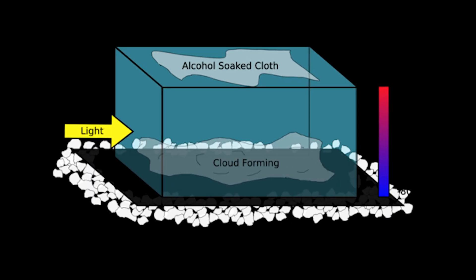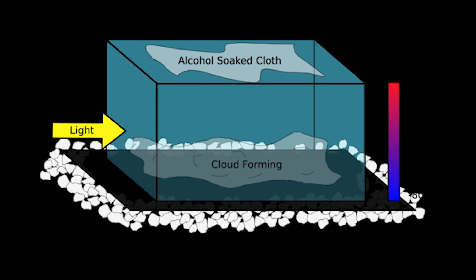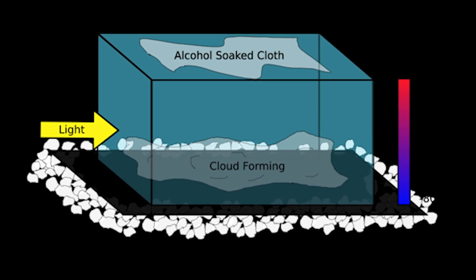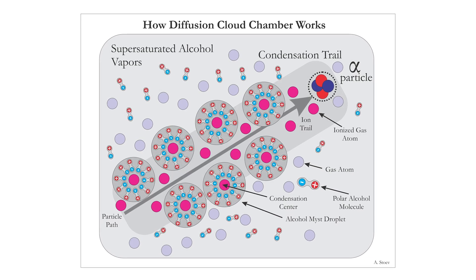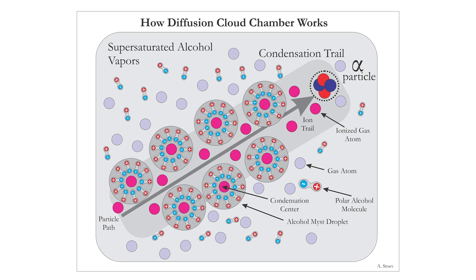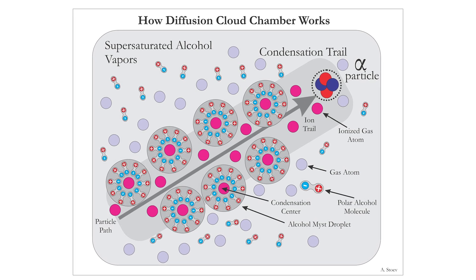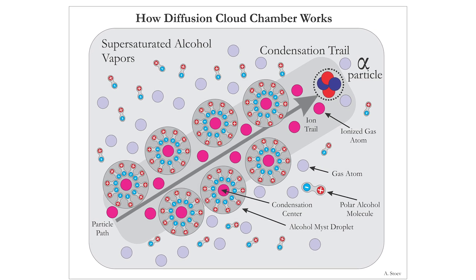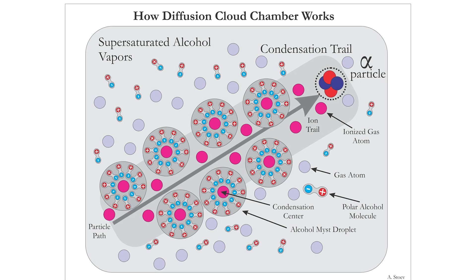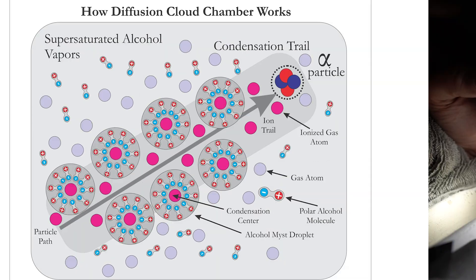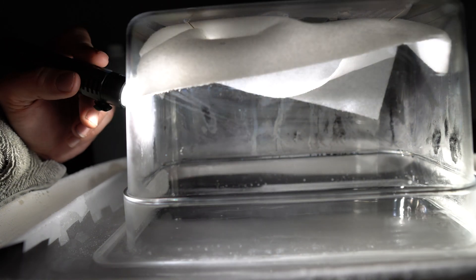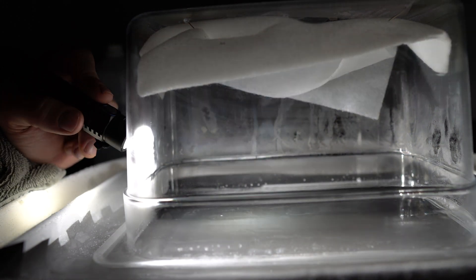The chamber works on a simple principle. The alcohol evaporates from the felt at the top of the chamber, but when the gas gets close to the cold metal plate, it starts to condense into a liquid. The air in this region near the plate is completely saturated with alcoholic vapor. High energy particles zooming through disrupt the electrons in these particles, and that disturbance creates the seed needed for an alcoholic cloud to form.